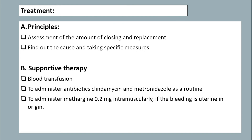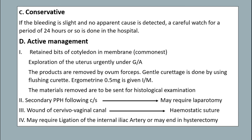Supportive therapy includes blood transfusion and antibiotics. Administration of methylergometrine intramuscularly if uterine bleeding is seen. Conservative management if bleeding is slight and no apparent cause detected, with careful watch for a period of 24 to 25 hours in the hospital. Active management includes removal of retained bits of cotyledons and membranes under GA using ovum forceps, and general curettage is done. Ergometrine is given intramuscularly. For secondary PPH following caesarean section: laparotomy, wound repair, cervical-vaginal canal hemostatic suture, and ligation of the internal iliac artery are performed, or hysterectomy.